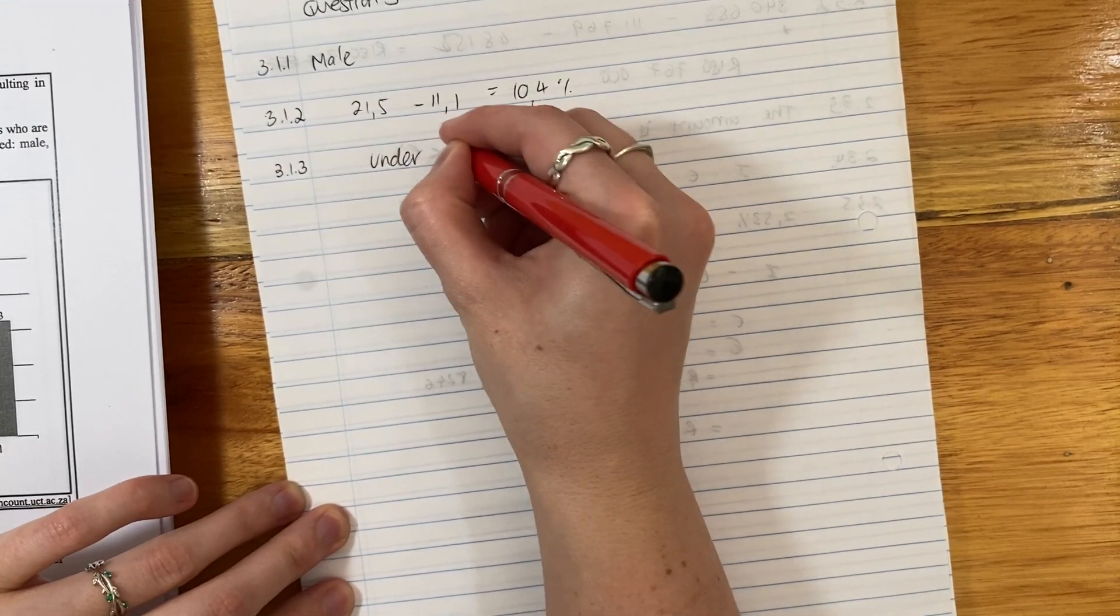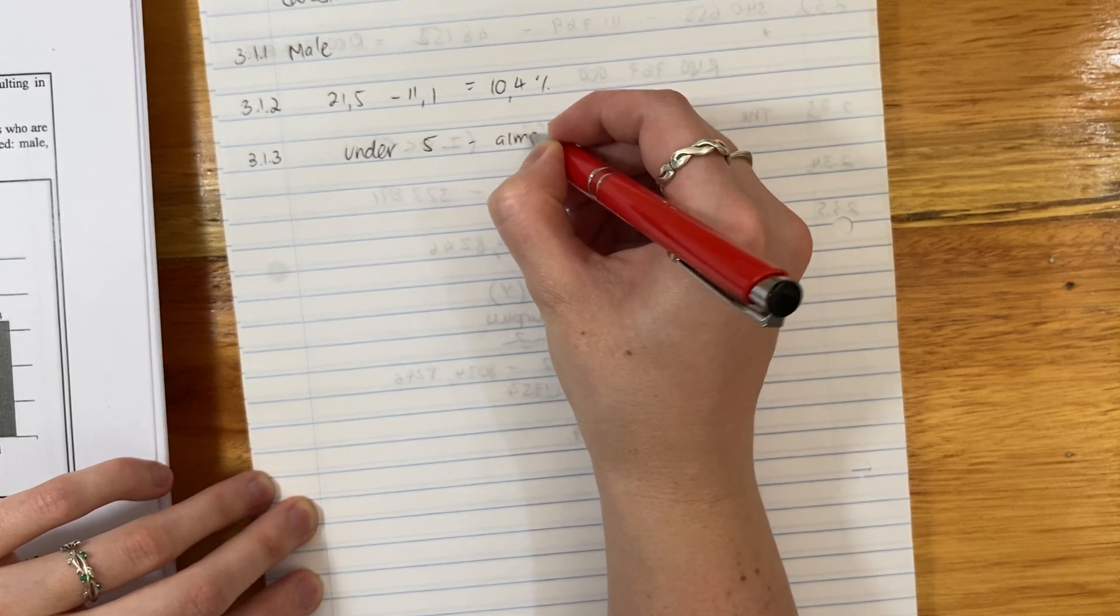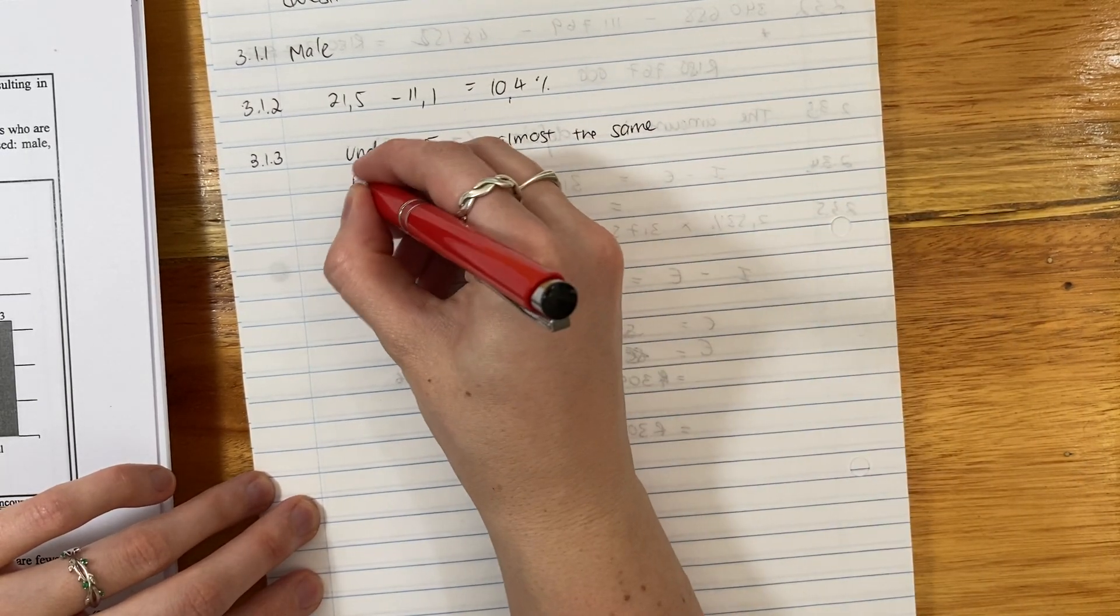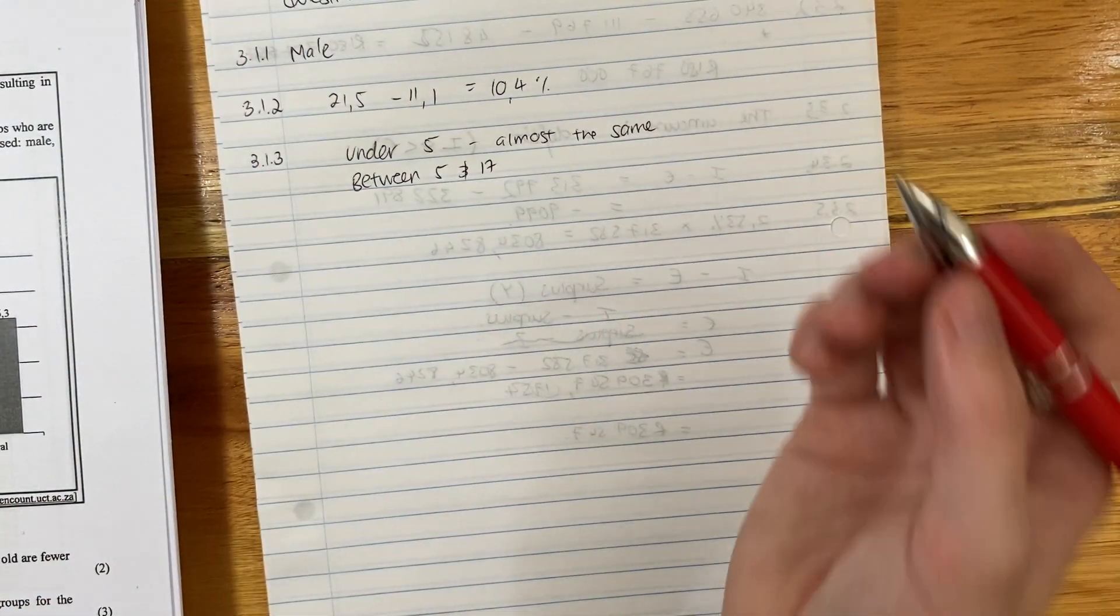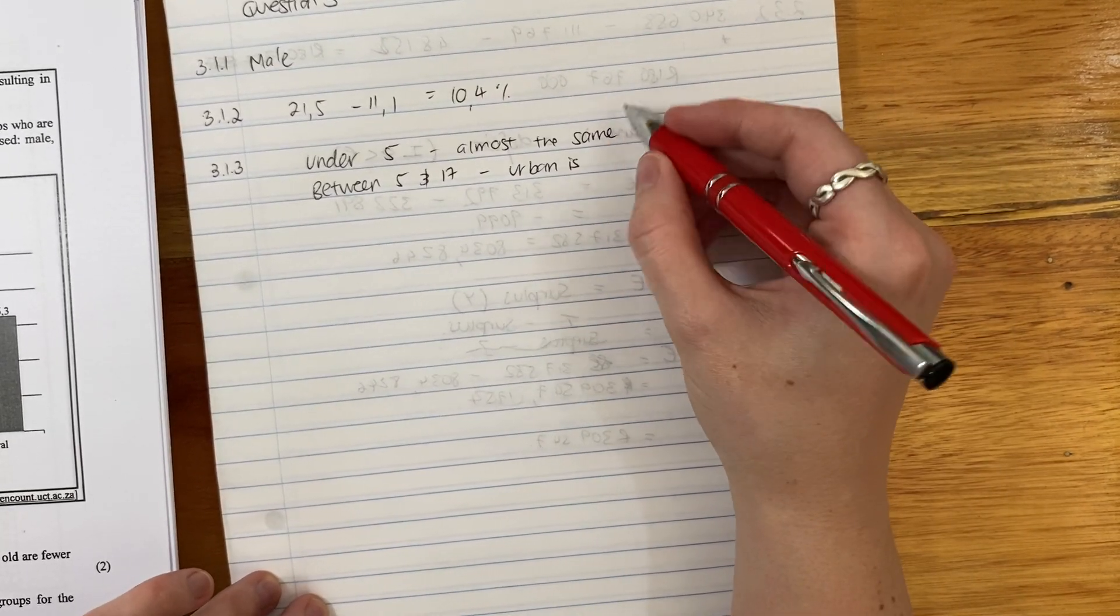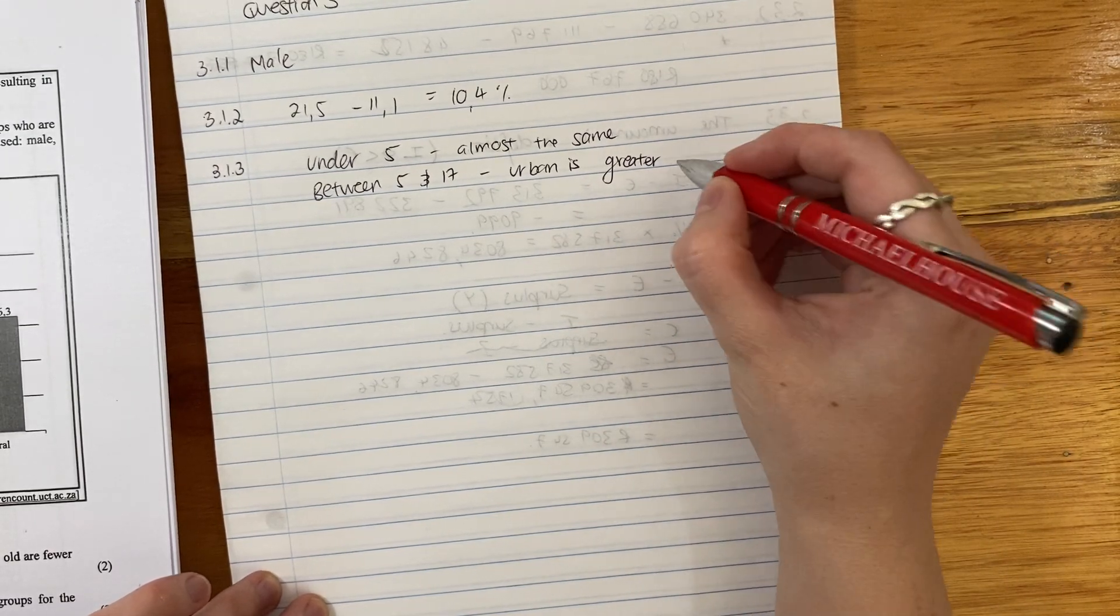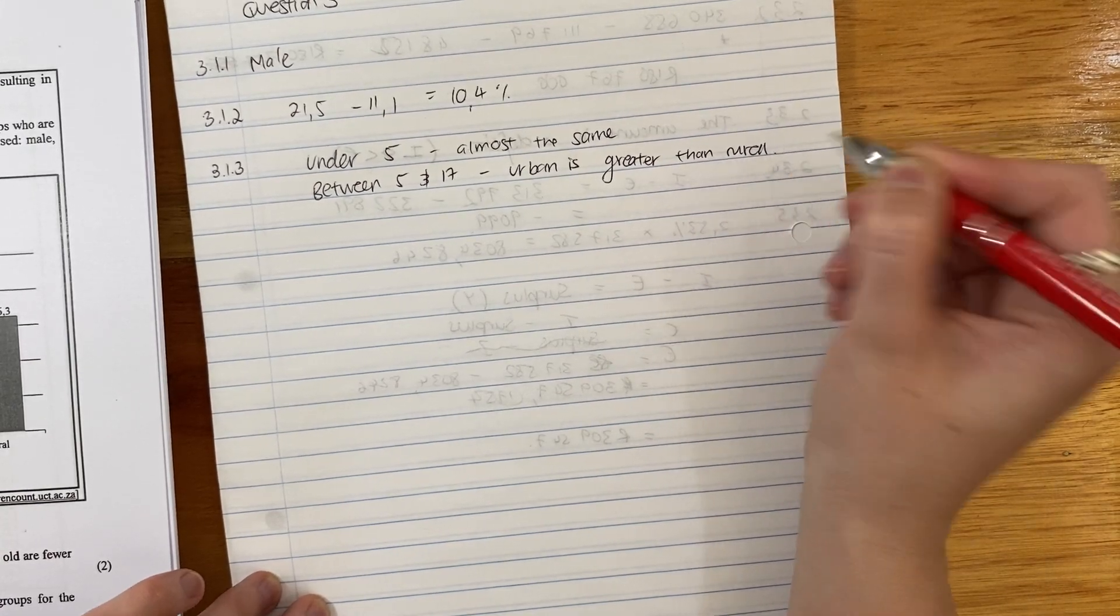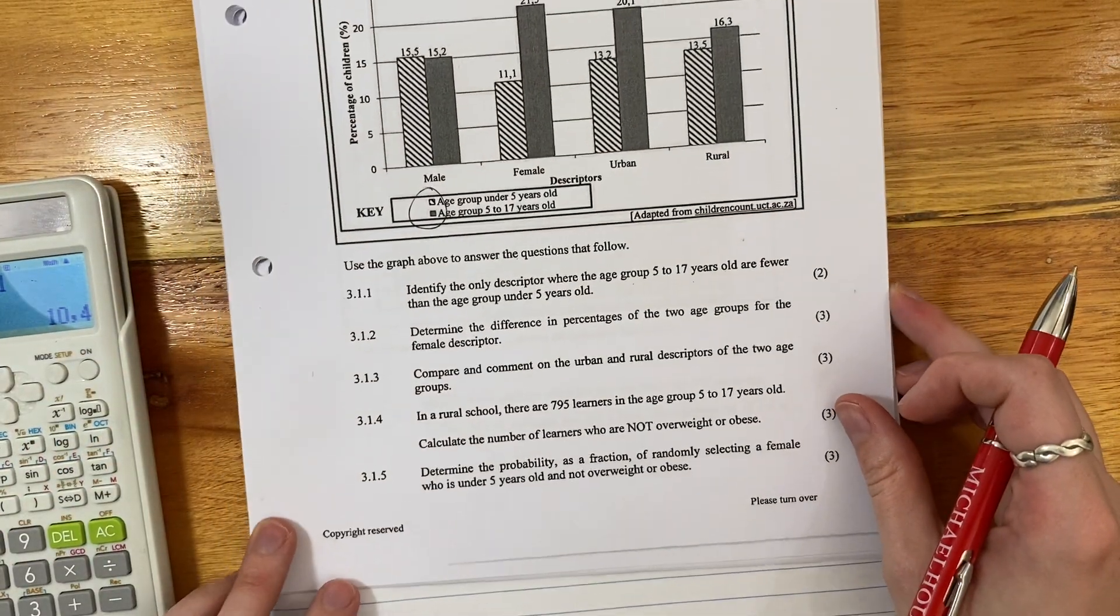So you just have to say under 5, they are almost the same. Obviously write in full sentences, and then we say between 5 and 17, between the two, what do we say? We can say urban is greater or larger or higher, is greater than rural. And that's all you need to say. That's the comparison they asked for. Let's continue.